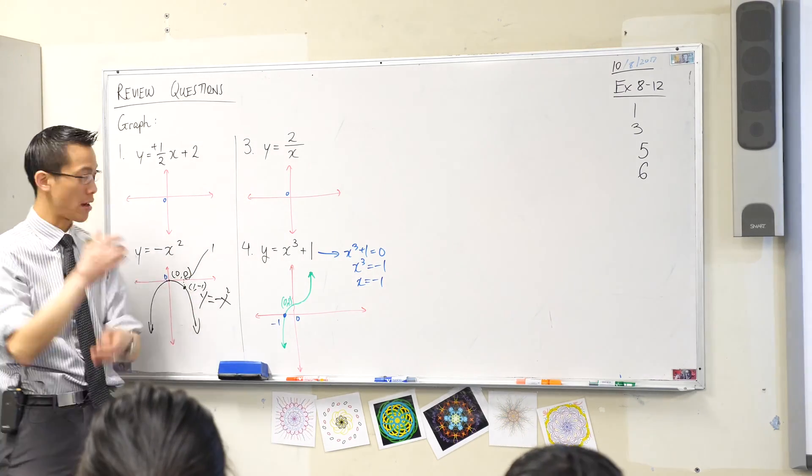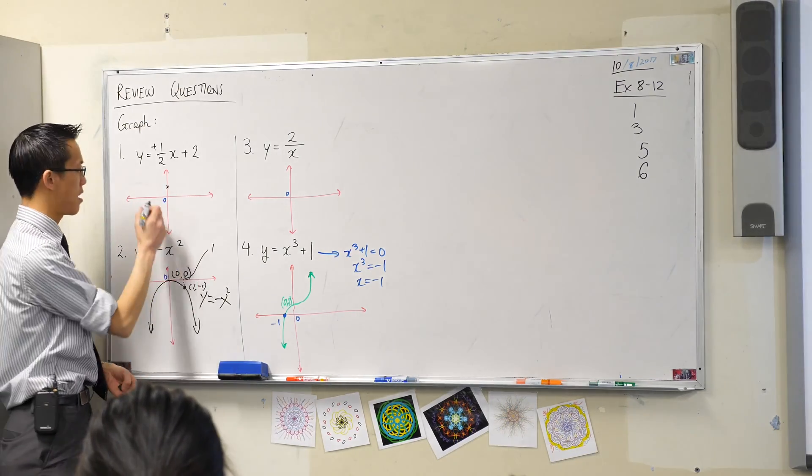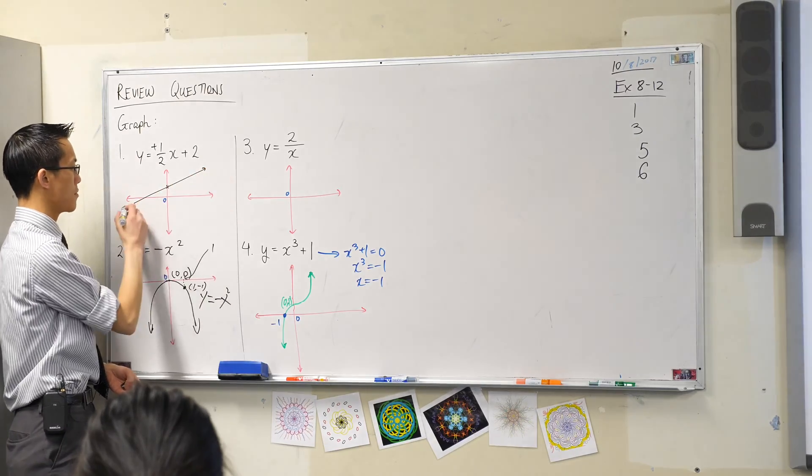What does the plus two tell me? It's how high it is, right? So it's the y-intercept, so there's two. So now I'm going to draw it in. There you go.